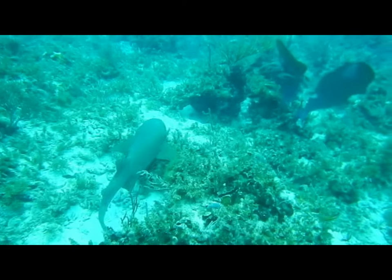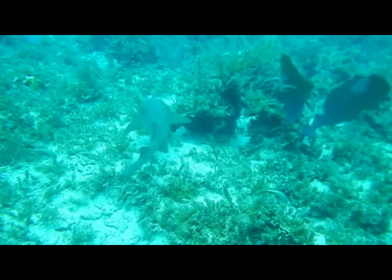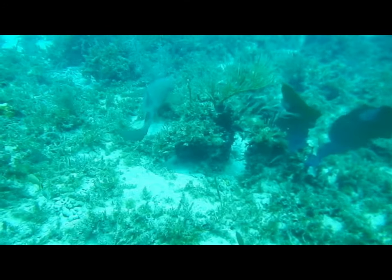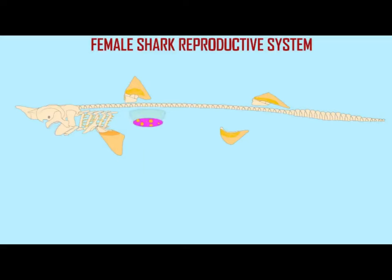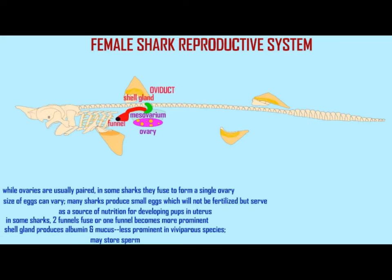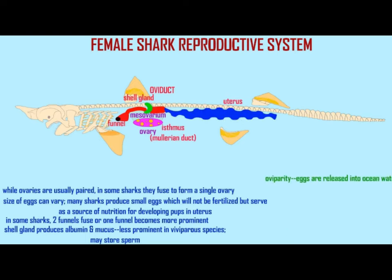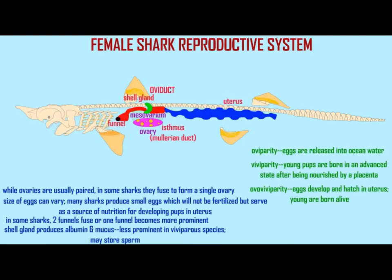There are different ways that sharks can reproduce. For example, some lay eggs and are called oviparous. Others give birth to live young after the young develop inside the mother, being nourished through actual placental tissue. This is known as viviparous.